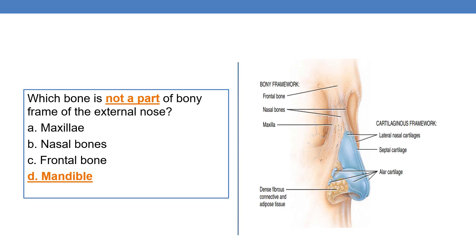Next question: which bone is NOT a part of the bony framework of the external nose? If you see in this picture, you can find the bony framework of the nose is formed by the frontal bone, nasal bones, and maxilla. So which bone is not a part? The answer is the mandible. The mandible is near the chin and is not a part of the bony framework of the nose.